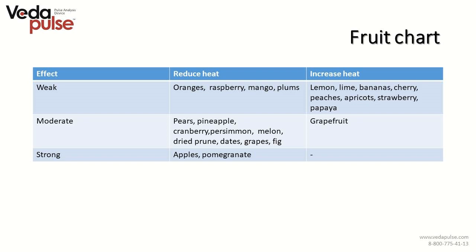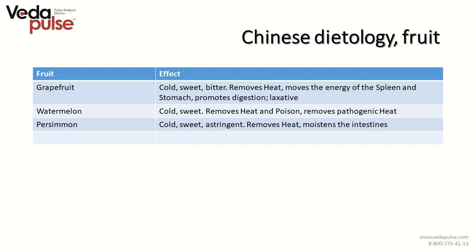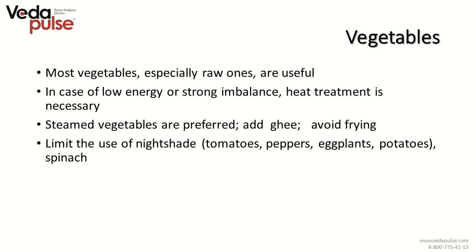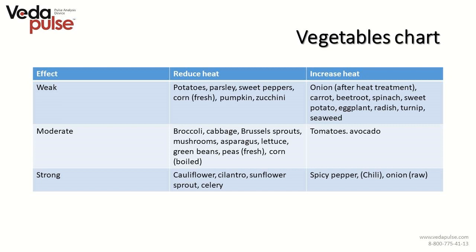Fruits are recommended to people of this type; fruit juice is beneficial as well. Most fruit is beneficial with a cooling, soothing, and harmonizing effect. Oranges, raspberry, mango, and plums reduce heat weakly, while apples and pomegranate reduce heat strongly. According to traditional Chinese medicine, grapefruit, watermelon, and persimmon are recommended as anti-hypertensive fruits. Most vegetables — especially raw — are useful. Steamed vegetables are preferred; add ghee and avoid frying. Potatoes, parsley, sweet peppers, corn, pumpkin, and zucchini remove heat, while onions and chili increase heat.